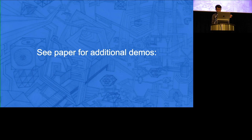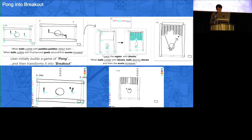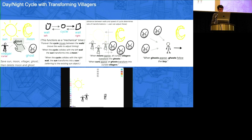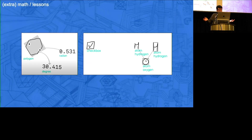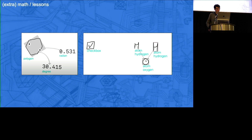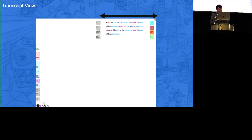There are lots of other demos in the paper — I really invite you to take a look, also on the website via the QR code. For example, make a game of Pong that transforms into the Breakout game with similar mechanics — that actually works. You can also create a day-night cycle with ghosts transforming into villagers — very game prototype-y. Or even further, you have this friend that collects treats for you to increase points. For those interested in more educational applications, I've also explored things like visualizing the mathematical properties of an object with different labels, or chemistry lessons in a computational notebook kind of thing.